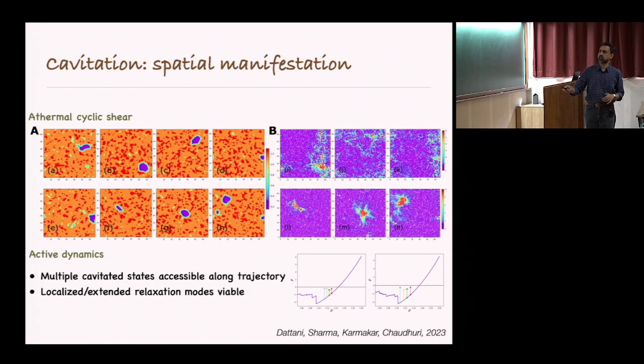These are some spatial pictures. These are along a single trajectory. You are doing this cavitation at different densities and you can see it's not the same spot that is always failing. There are different spots that fail. Basically there are diverse local minima that have these kind of structures and these are the corresponding displacement fields.